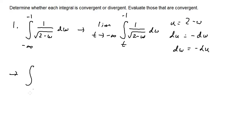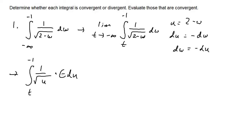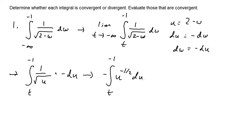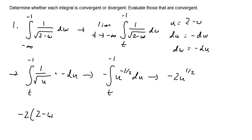We have the integral from t to negative one of one over the square root of u times negative du. The negative one comes outside the integral, giving us negative one times the integral of u to the negative one-half power du. The integral of u to the negative one-half is two u to the one-half power.